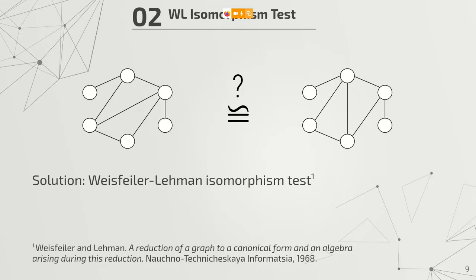Starting with the Weisfeiler-Lehmann isomorphism test — what is isomorphism? Isomorphism is defined as determining if two graphs are topologically identical, meaning they have an identical structure. Formally it is defined as a bijection between the nodes of the two graphs. It is useful because if we know some properties of one graph and have another graph with an identical structure, and the two graphs are isomorphic, we can infer information for the second graph from the first. The Weisfeiler-Lehmann isomorphism test is an algorithm that helps us determine if two graphs are isomorphic.